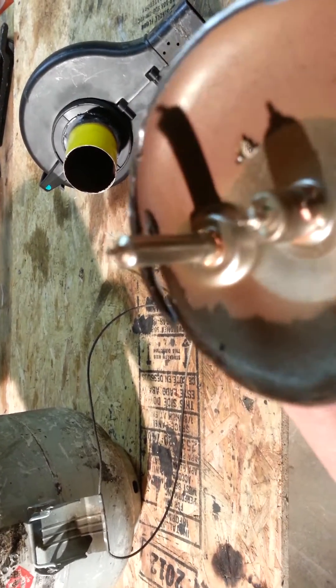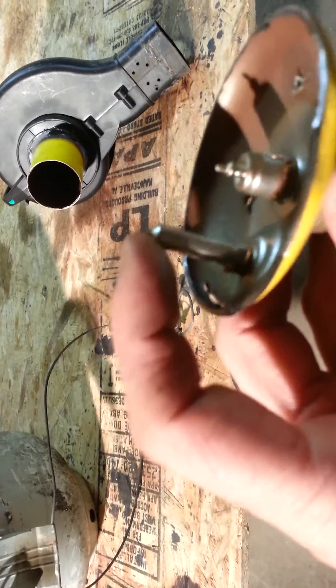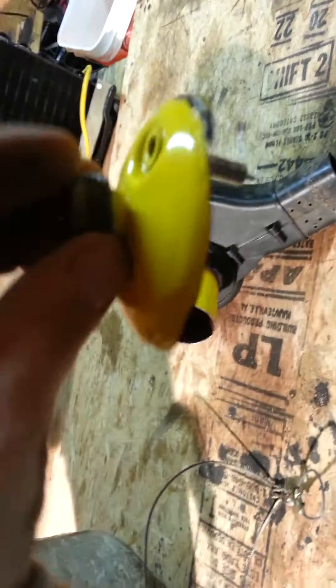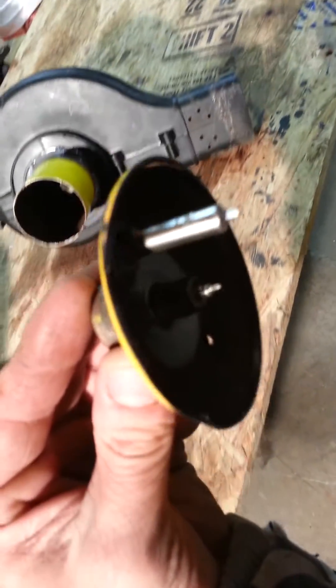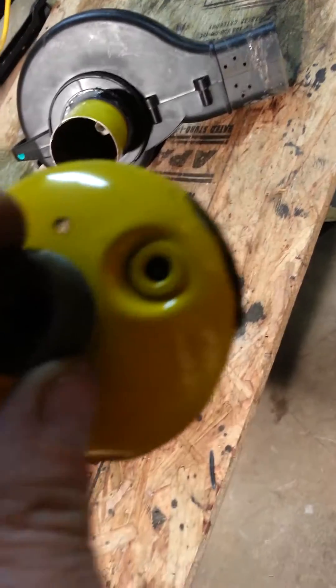This valve right here basically keeps the bottle from exploding if you throw it in a fire or if the bottle gets too hot for some reason. That will vent overpressure.